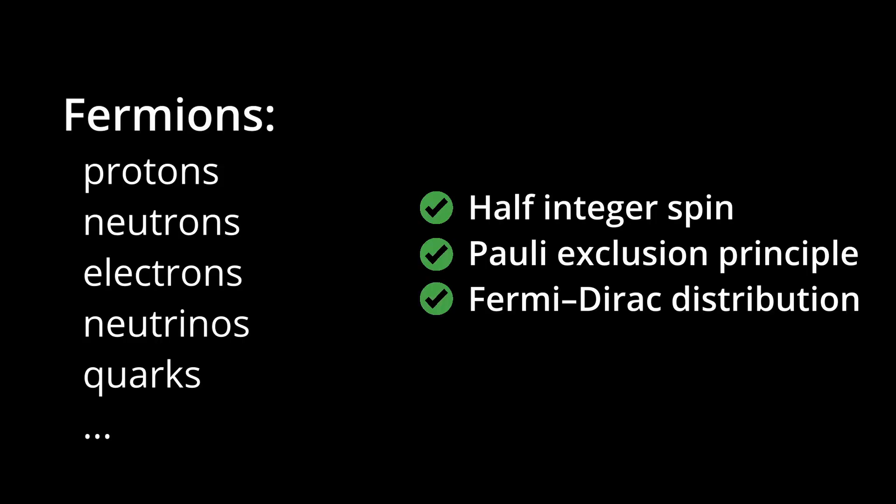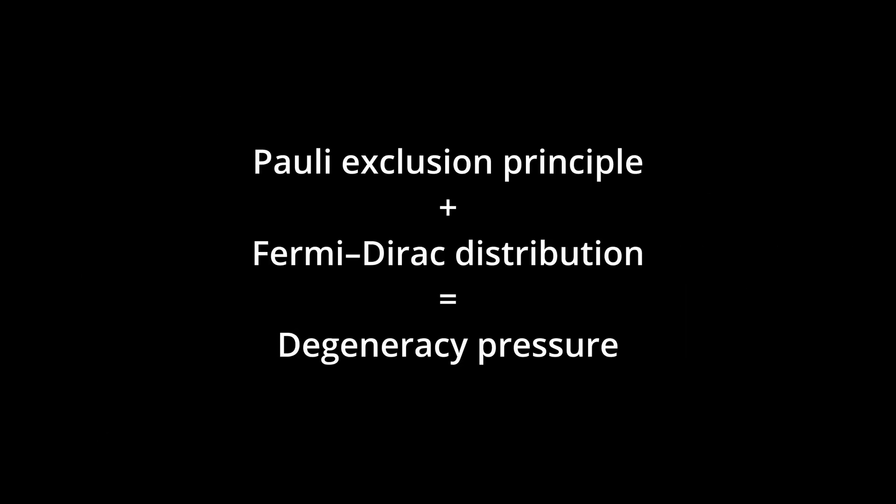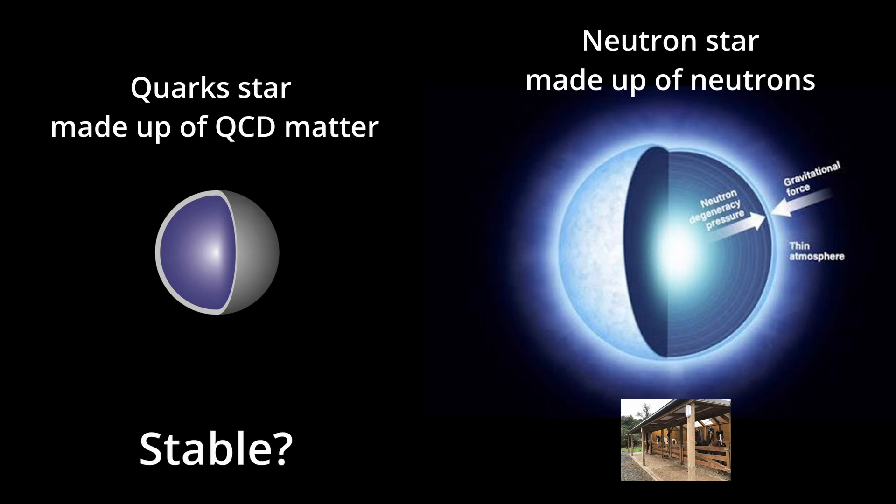With degeneracy taking its hold under the pressure, making the QCD matter stable, just like how neutron degeneracy matter in a neutron star is stable.